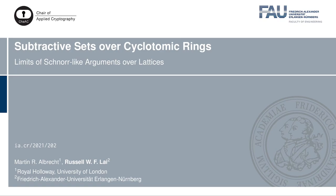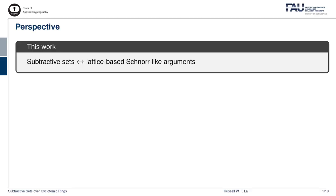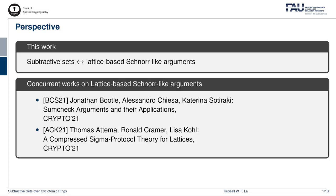This is a joint work with Martin Albrecht. This work is about the relationship between the mathematical objects called subjective sets and lattice-based Schnorr-like arguments. Since you are watching this video, you are probably interested in lattice-based Schnorr-like arguments in general. Therefore, I recommend checking out these concurrent works which are also appearing in this year's Crypto.